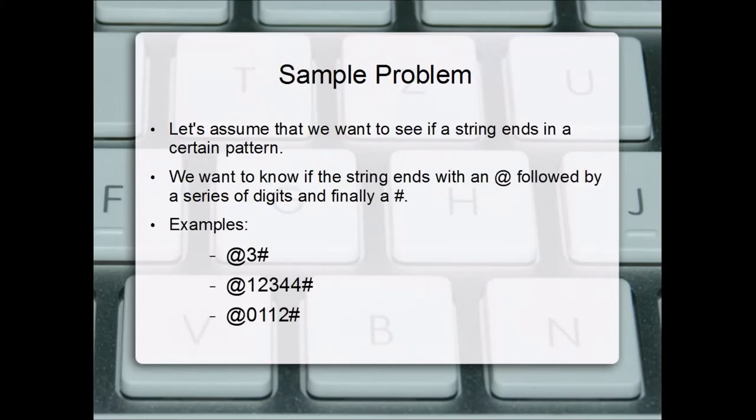Let's assume I want to see if a string ends with a certain pattern. We want to know if the string ends with an at sign followed by a series of digits and finally a number sign. So here are some examples: @3#, @12344#, @0112#. So we want to know if a string ends in a pattern like this. We can build a finite state machine that models this pattern.